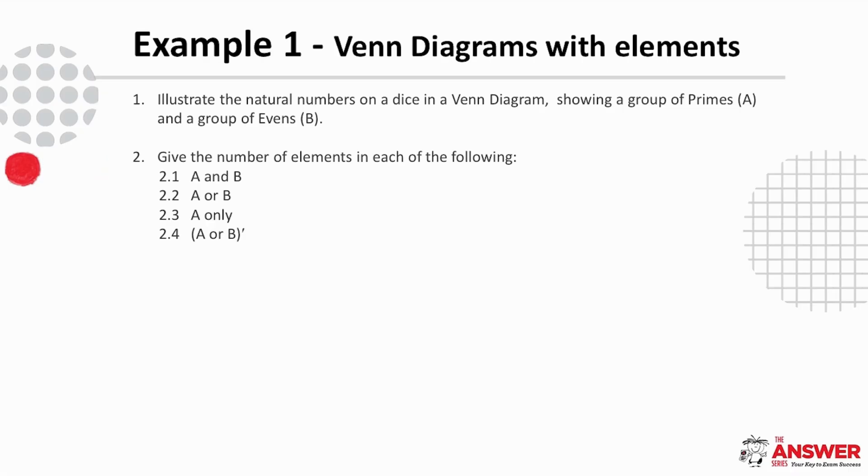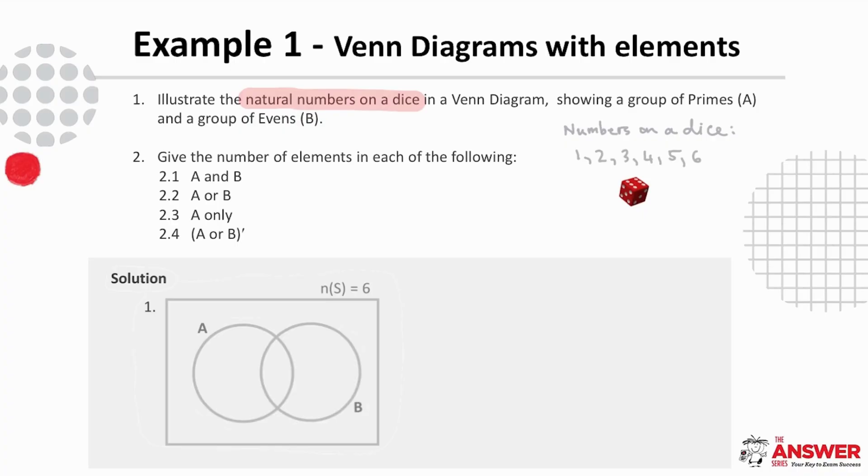So let's start by creating the Venn diagram. First of all we need to identify that we are dealing with elements, the actual numbers on the dice. Next we consider how many elements there are in total in the sample space. So all the numbers on a dice make up six elements all together and so we start here with a rectangle and the number of elements in the sample space.